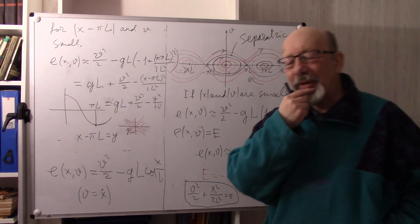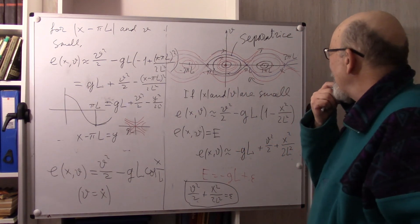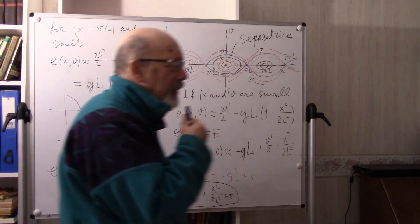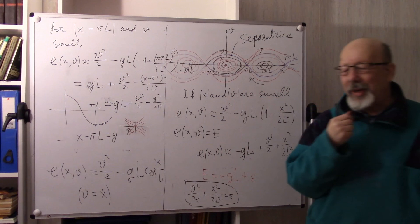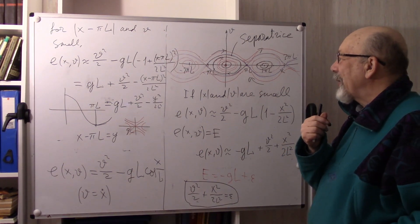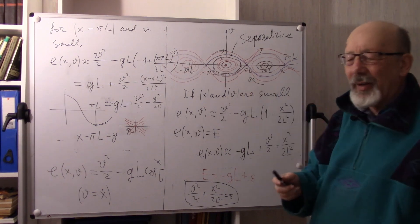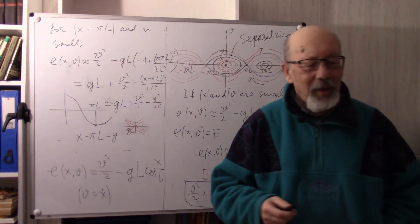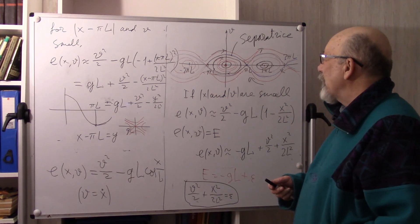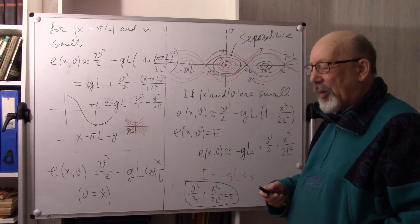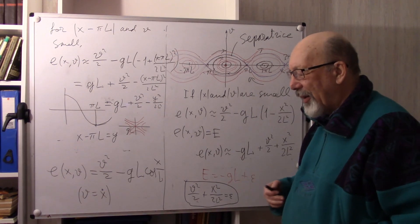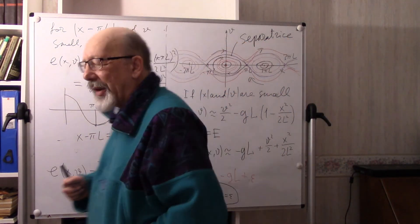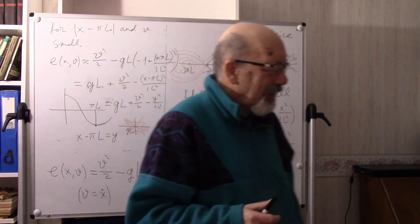The separatrix is the trajectory that separates two regimes: bouncing back and forth, and monotone rotation. The overall picture is sometimes called 'cat's eyes.' Differential equations are a source of beautiful pictures — this is one of them. Studying this further reveals much more complex and interesting structures; we are just at the entrance to this theory.